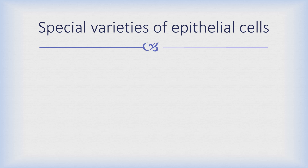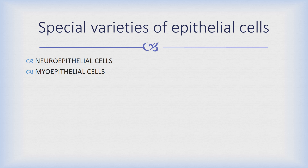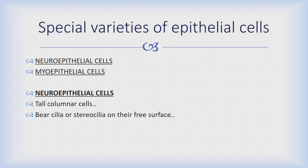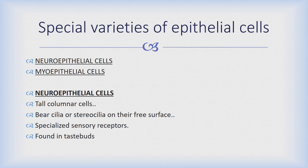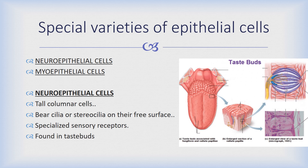There are certain special varieties of epithelial cells known as neuro-epithelial cells and myo-epithelial cells. Neuro-epithelial cells are tall columnar cells and have cilia or stereocilia on their free surface, that is their apical domain. They have specialized sensory receptors and are found in taste buds. The word 'neuro' is added because they have a connection or specialization related to the nervous system.